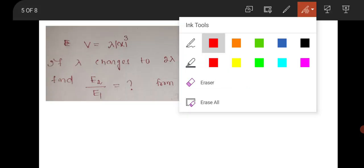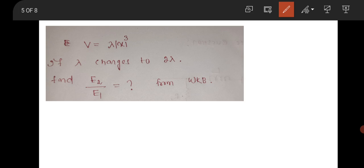Next question was from WKB. This was very interesting. I have made this trick several times in my channel. If you have a potential V equals lambda times x to the power p, then your energy will vary as n to the power 2p/(p+2).